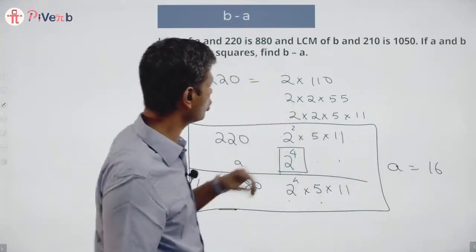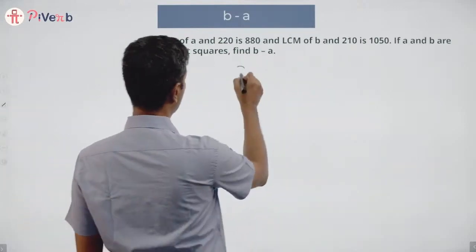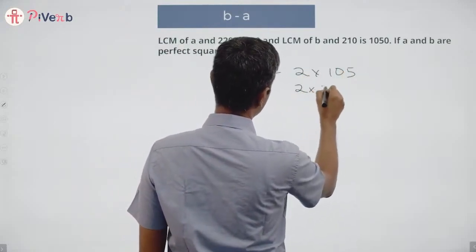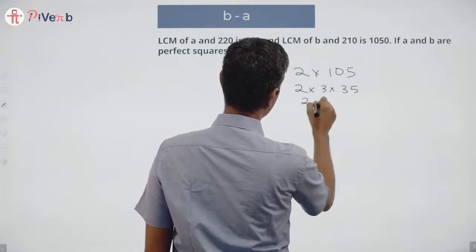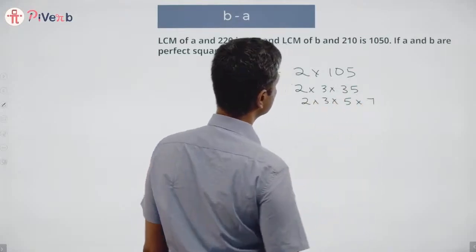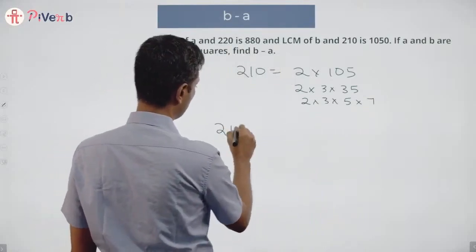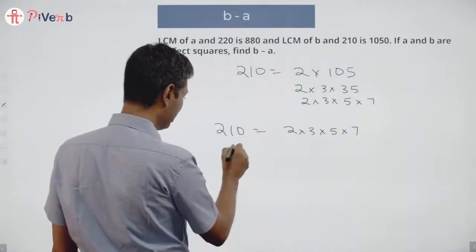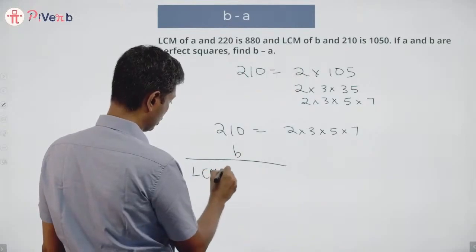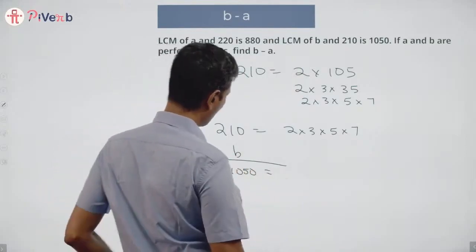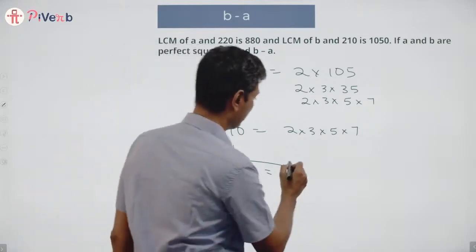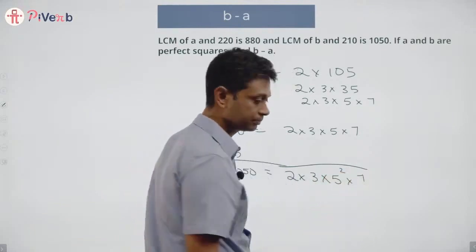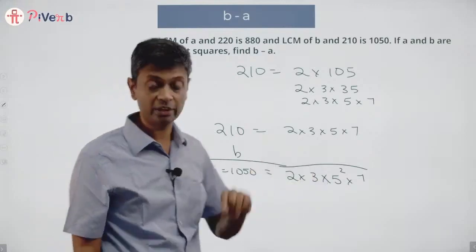Now the same approach for b. Prime factorize 210: 210 = 2 × 105 = 2 × 3 × 35 = 2 × 3 × 5 × 7. And 1050 = 210 × 5, so the prime factorization of 1050 is 2 × 3 × 5² × 7.